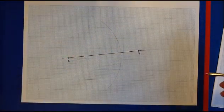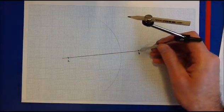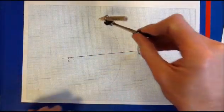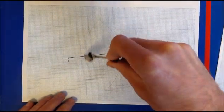Then you're going to repeat the exercise, except this time you're going to put the compass point on B, like that. And we're going to draw a similar arc, like a mirror image, like that.